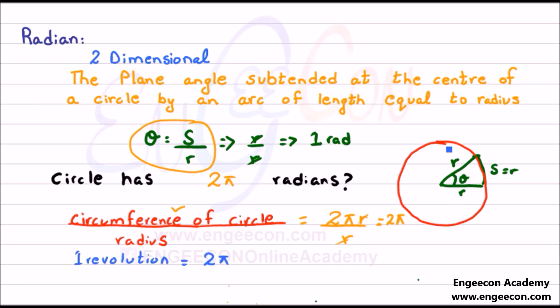So we can conclude that one revolution of this circle is equal to 2π which is equal to 360 degrees, or we can say that π radian is equal to 180 degrees.